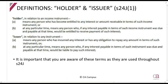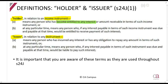We can find the definitions of holder in Section 24J(1). Don't be shy to look this up in an exam situation — under pressure we sometimes mess up. A holder is described in relation to an income instrument, and an issuer in relation to an instrument. The holder means any person who has become entitled to any interest, and the issuer means any person who has incurred any interest. That's basically the most important part of those definitions.